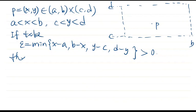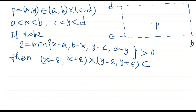And it is easy to see that the interval x minus epsilon to x plus epsilon, the Cartesian product of this set, is contained in the rectangle (a,b) times (c,d).